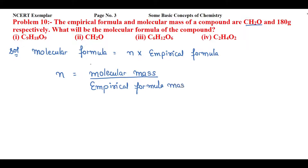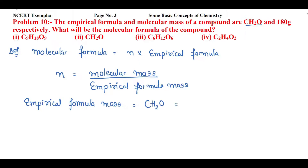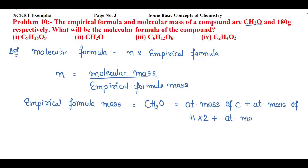Next, we find the empirical formula mass by adding the atomic masses of all elements present in the empirical formula CH2O. That means we add the atomic mass of carbon — there is one carbon — plus the atomic mass of hydrogen, with two hydrogens, plus the atomic mass of oxygen.